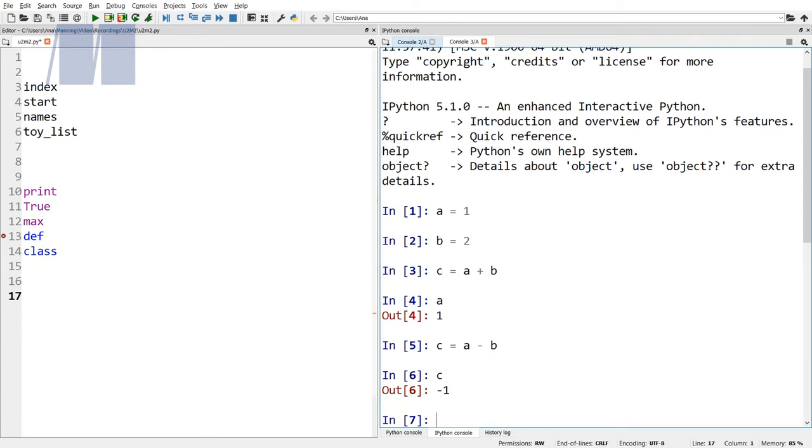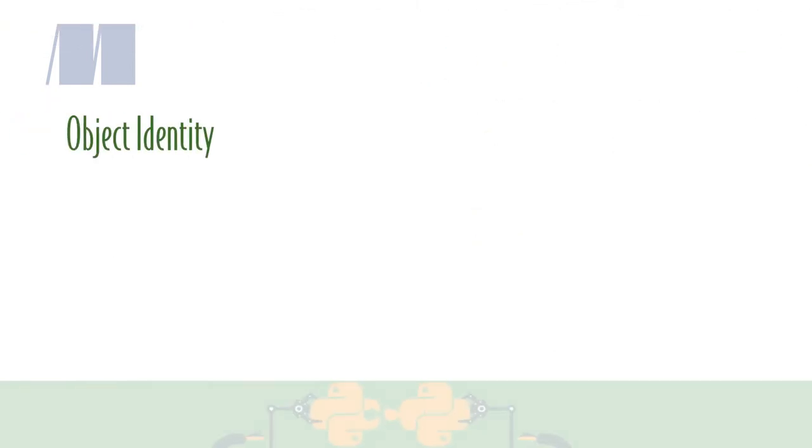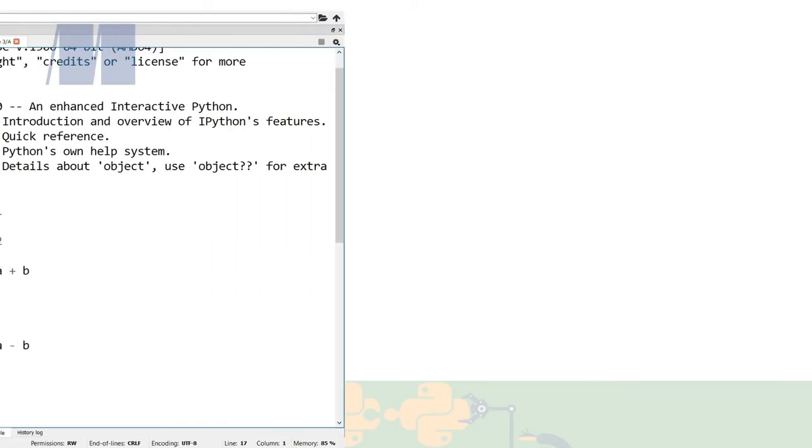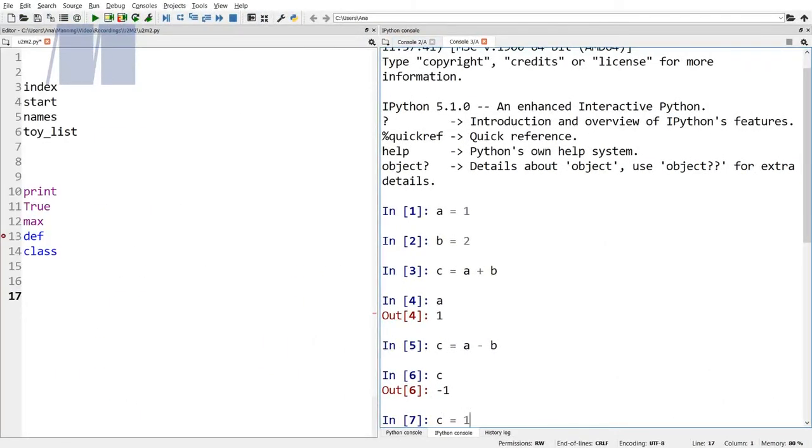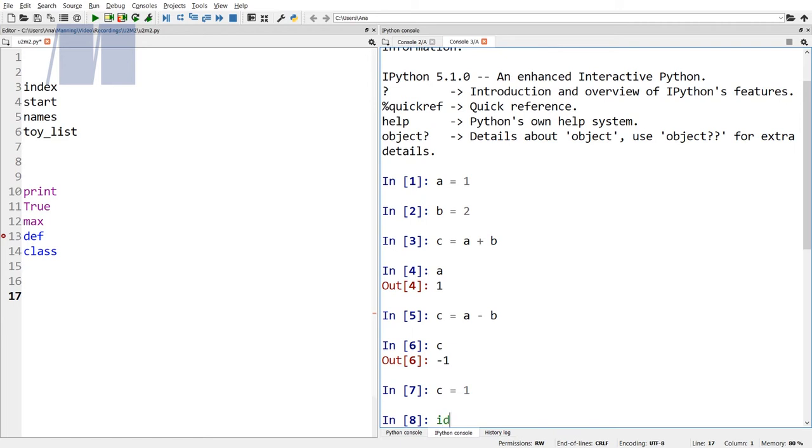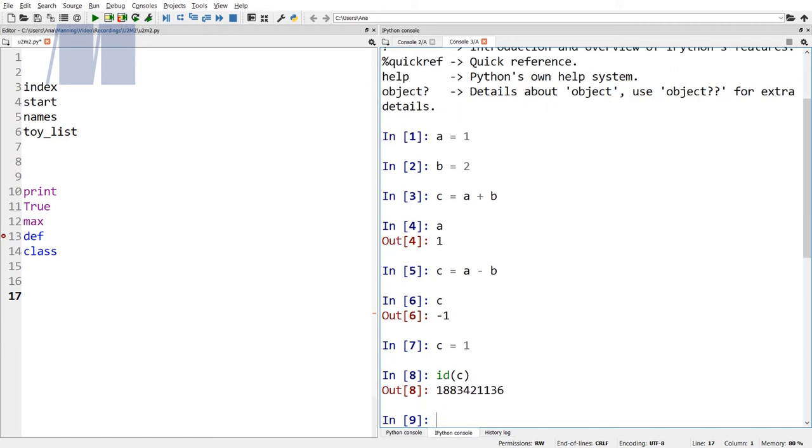Variable names merely bind names to objects. The same name can be reassigned to a different object. A Python operation named id shows the identity of an object in the form of a sequence of digits. This identity is unique for every object and will not change while the object exists. Type the following lines in the console: c equals 1, enter, id open parentheses c close parentheses, enter. This is what my console prints out, but yours might be different.